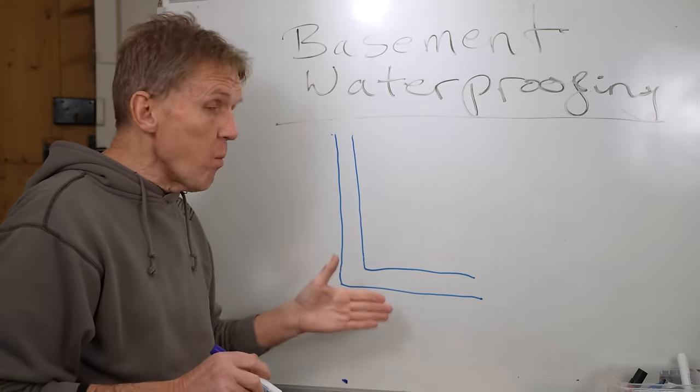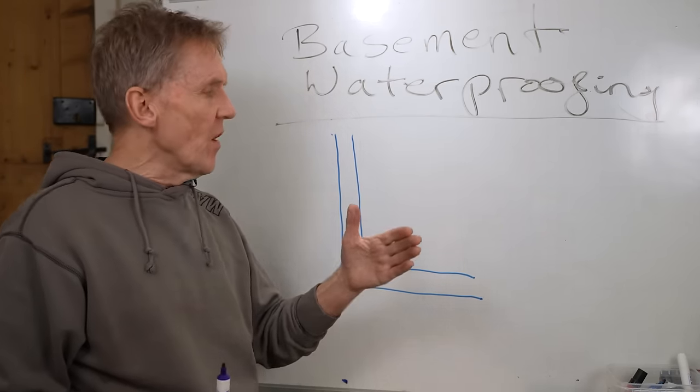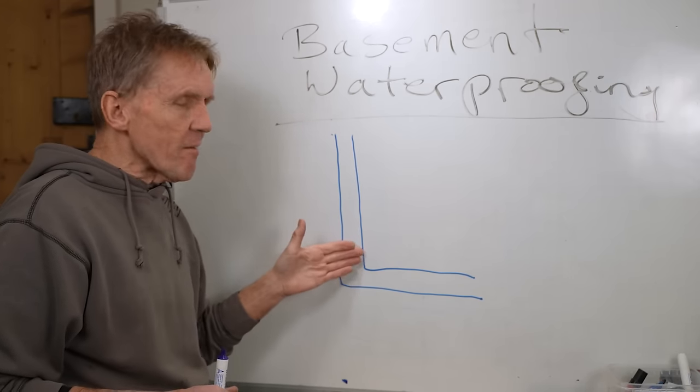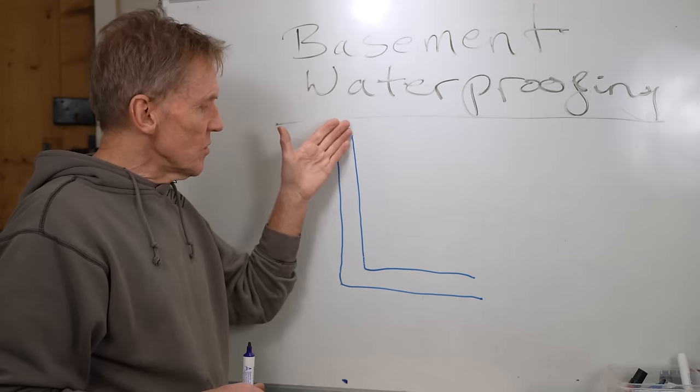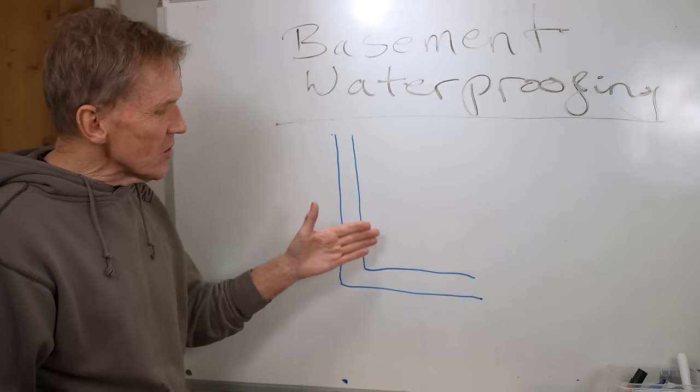And what that does is as it gets wet, those crystals inside the cement kind of reconstitute themselves and they self seal. So when you first put it on the wall, you may think, oh, this is still leaking through. But after a few weeks, you find that that cement barrier has started to do a very effective job and stop that water coming through. But you can't stop there.